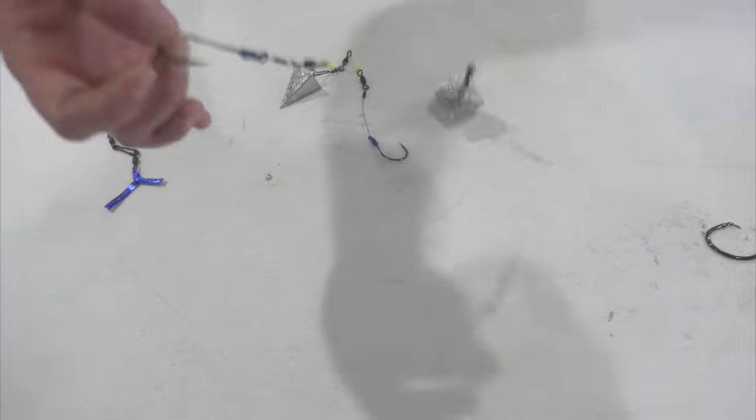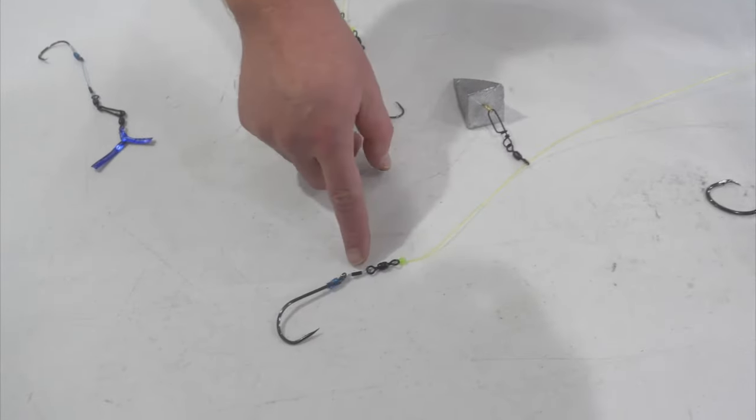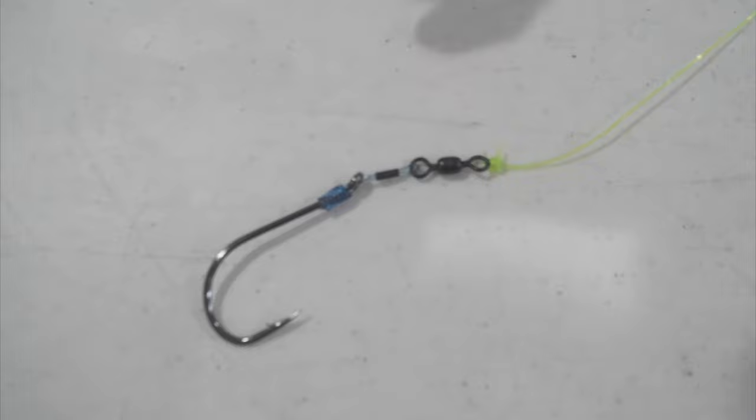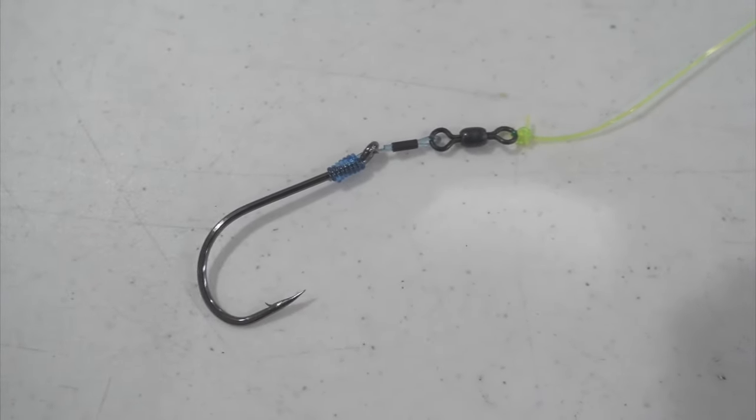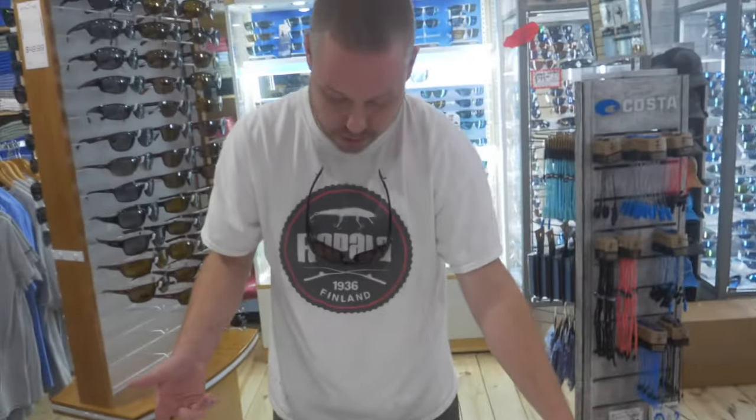This particular rig that we're looking at would be a J rig with a very short bite leader. That short bite leader will give you the advantage of having distance on your cast without it helicoptering as much.